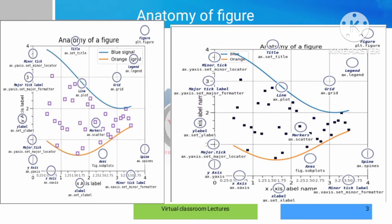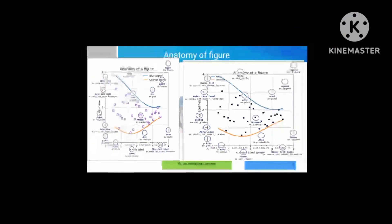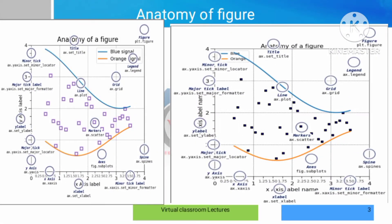Now we have a figure here. In this figure, we have two plots. The horizontal line is the x-axis and the vertical line is the y-axis. On the x-axis we have a label — for example, student name — and on the y-axis we have marks. The name given to these axis labels is the x-axis label and y-axis label. The anatomy of a figure includes the title.